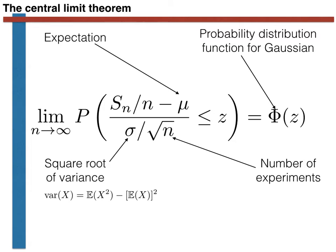Notice that technically, this expression is only valid in the limit of an infinite number of experiments. Hence, when you are asked to state the central limit theorem, it is important to include the limit sign. In all practical examples, however, we will assume that this result holds even when we have not performed an infinite number of experiments — that is to say, we will assume that it holds for certain n that are less than infinity.